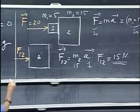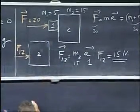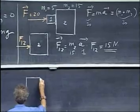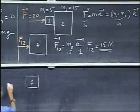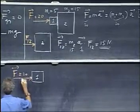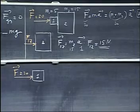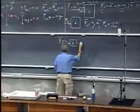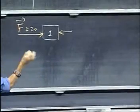Now I'm going to isolate number one out. Here is number one. Number one experiences this force F, which was the 20, and it must experience a contact force from number two. Somehow number two must be pushing on number one, if one is pushing on number two. And I call that force F21.